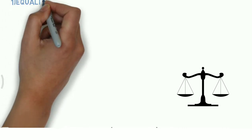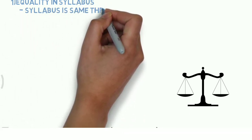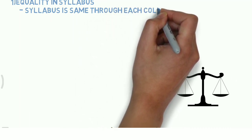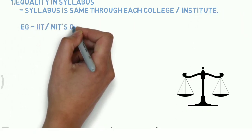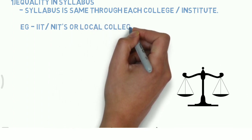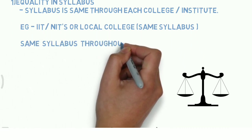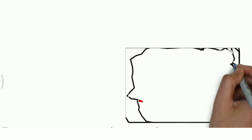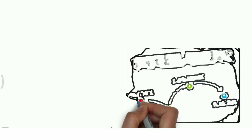Earlier, we had different syllabi for different institutes — every single institute, whether autonomous or non-autonomous, belonging to different parts of the nation, had a different set of syllabi. But now it's going to be the same syllabus rule. No matter whether it's IIT, NIT, a local college, private or government college — they're all going to have the same syllabus. This will help us when we go and apply for a job.